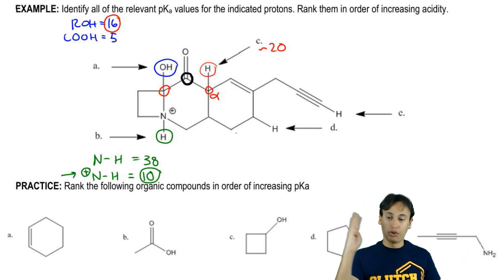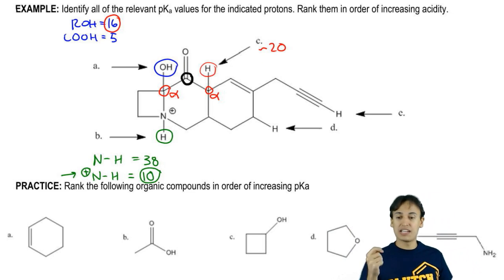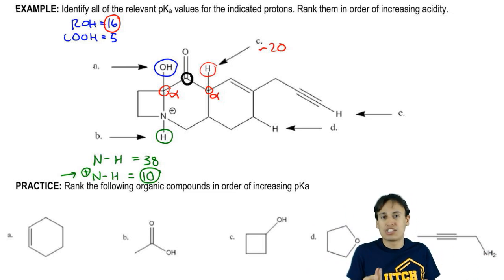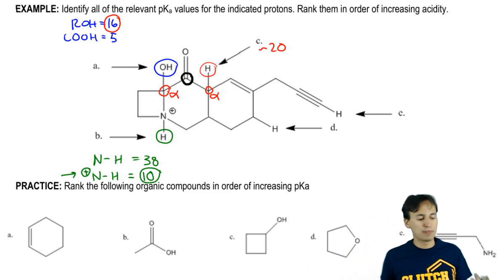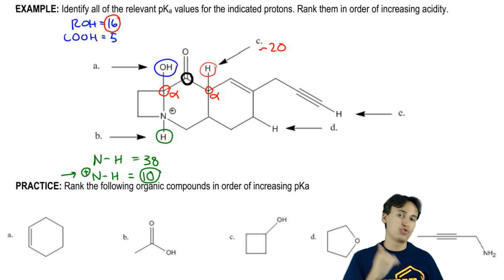Now you might be wondering, Johnny, isn't the other side also alpha? Sure, it is. This is also alpha. But notice that this alpha carbon doesn't have any hydrogens on it. It has an OH and the OH just has a pKa of 16 because that's just an alcohol. It's not special. An alpha carbon is only special if it has a hydrogen directly coming off of it which is going to give it a unique pKa of 20 as opposed to much higher for other types of carbons.